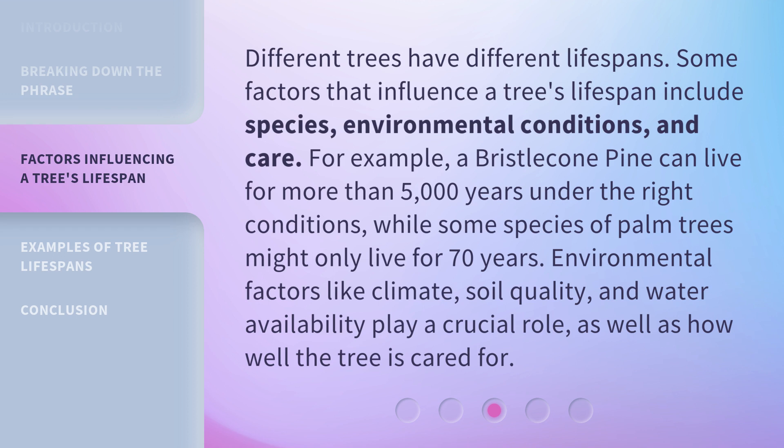Different trees have different lifespans. Some factors that influence a tree's lifespan include species, environmental conditions, and care. For example, a bristlecone pine can live for more than 5,000 years under the right conditions, while some species of palm trees might only live for 70 years. Environmental factors like climate, soil quality, and water availability play a crucial role, as well as how well the tree is cared for.